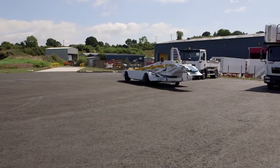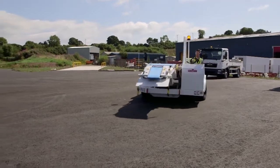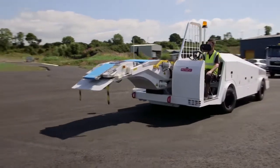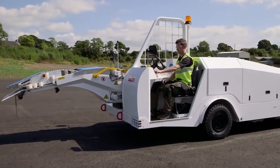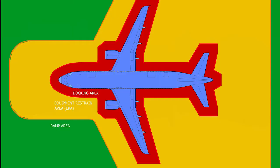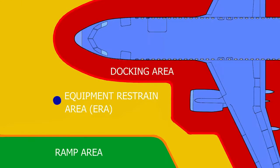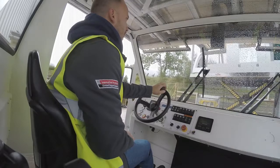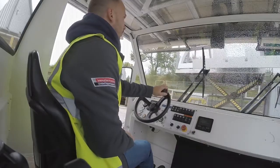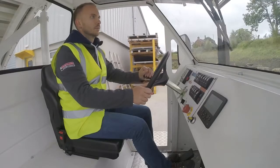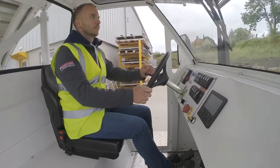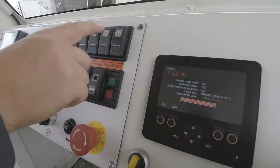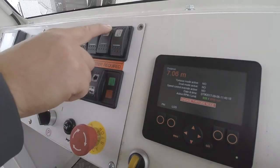The maximum speed limit in the ramp area is mandated by the airport and is usually 25kmph. When ground support equipment enters the equipment restrain area — a zone 8 metres away from the aircraft — it is expected that the operator will manually engage tortoise mode, either by the dedicated switch on the dashboard or by raising the platform.